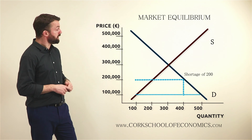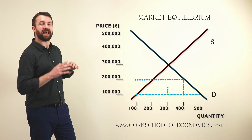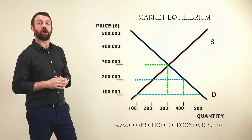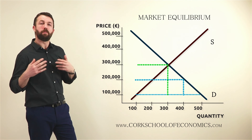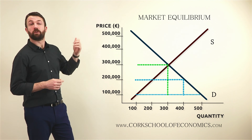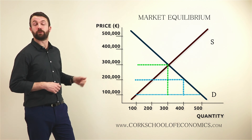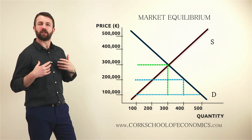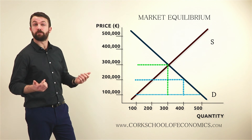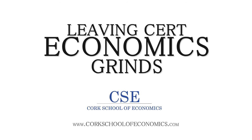Therefore the price has to go up again. It will go up until it gets to €300,000, because at that point quantity demanded and quantity supplied are equal. The market will clear and we will be back in equilibrium. So considering that at a high price the price will come down due to a lack of demand, and at a low price the price will go up due to excessive demand, the market always has to return to equilibrium. That is market equilibrium.